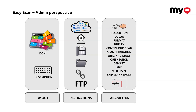The next step for the settings will be the parameters — everything from resolution to color, duplex, simplex, continuous scan, separation, original image, and all these things you can imagine. One important thing to know is that all the parameters mentioned here are highly dependent on the vendor and individual model of the machine you're using, so certain options might not be available for your device simply because the machine cannot handle it.